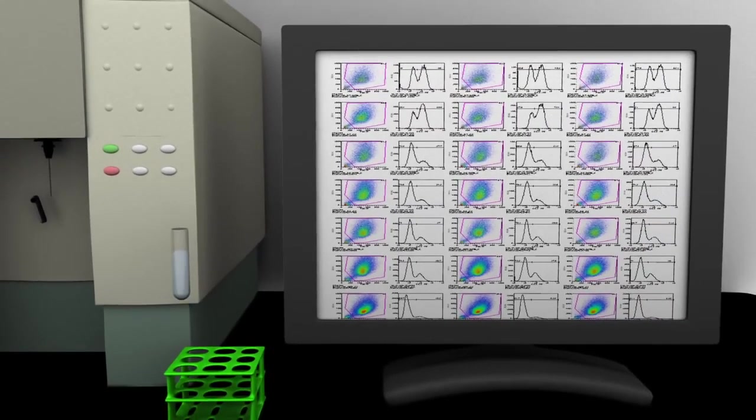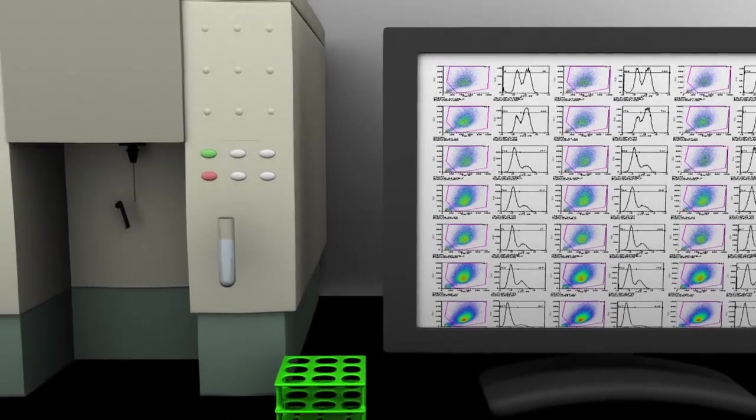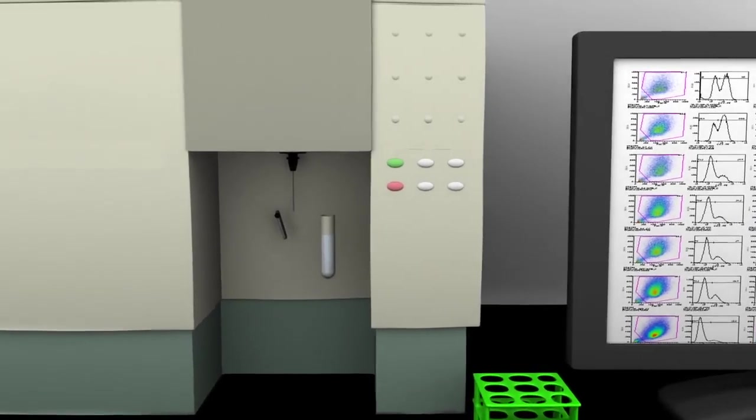Once a suspension of individual cells has been prepared for flow cytometry analysis from cells, tissues, or organisms, the prepared sample is placed on the flow cytometer.